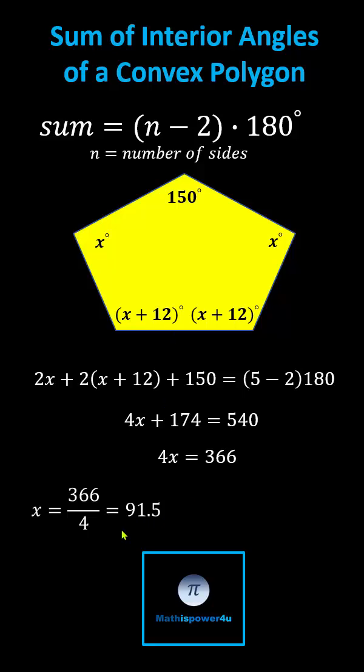Now, we need to find x plus 12, which is 91.5 plus 12 or 103.5. The angles are 91.5 and 103.5 degrees.